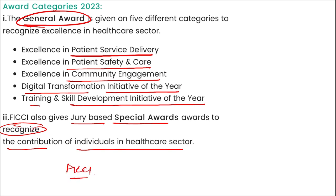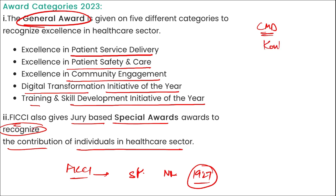Regarding FICCI: President is Subrakanta Panda, headquarter is in New Delhi, and it was established in 1927. Santosh Kumar Jha has been appointed as the new Chairman and Managing Director of Konkan Railway.